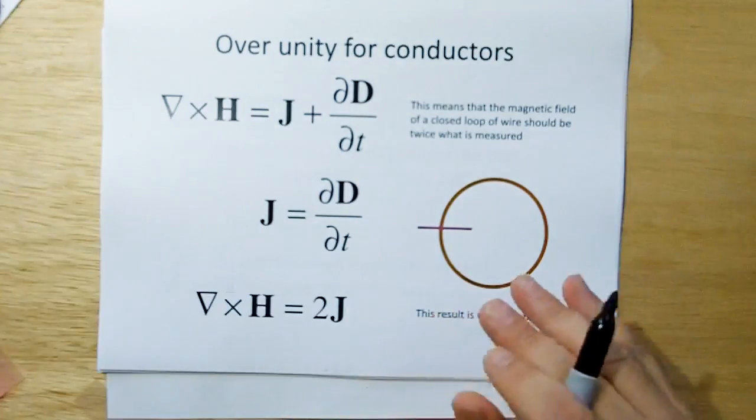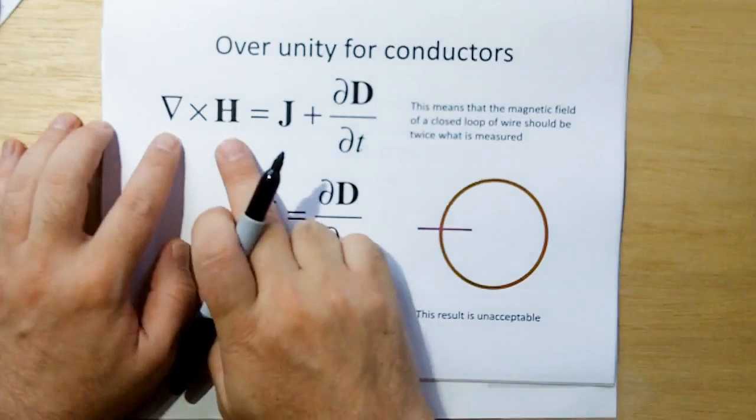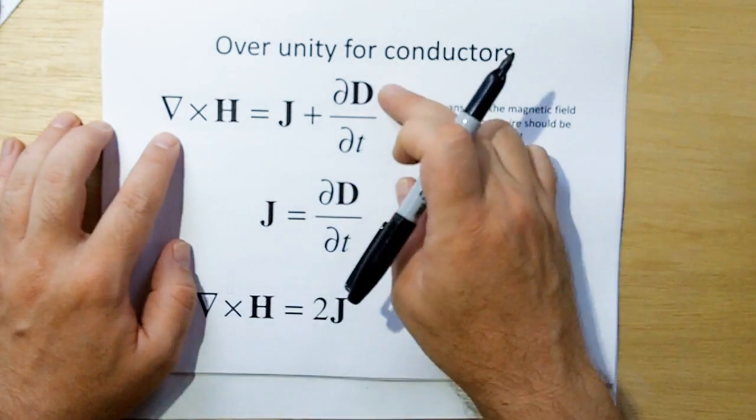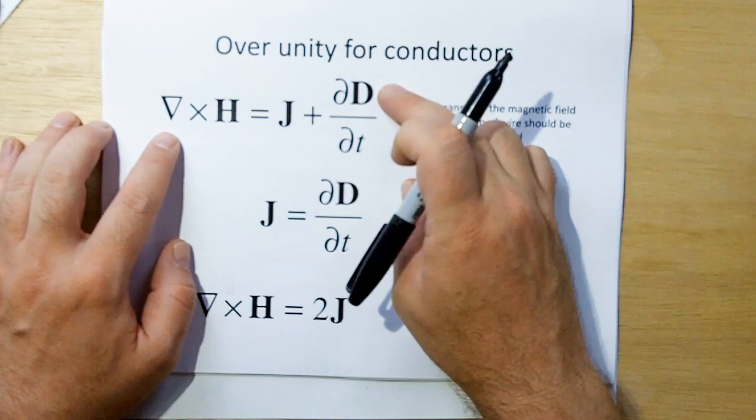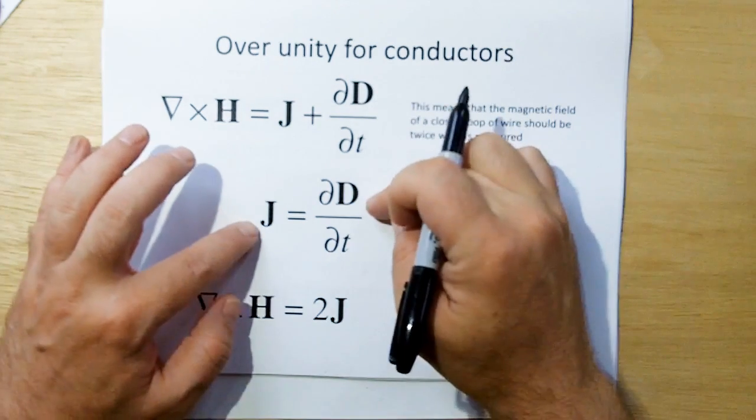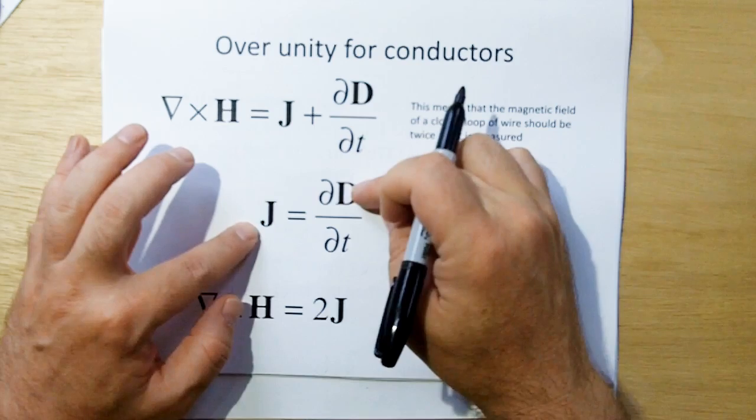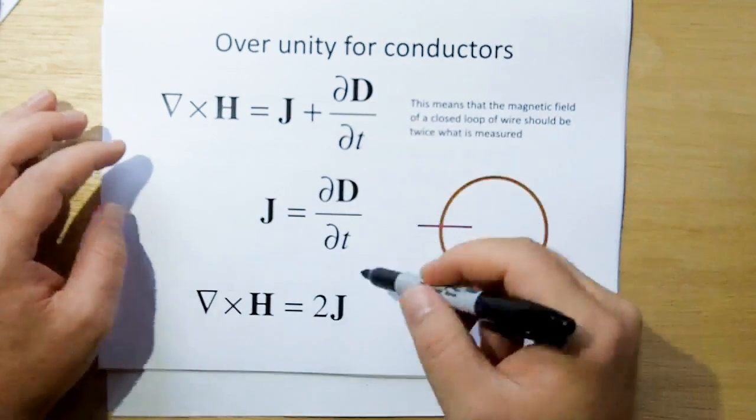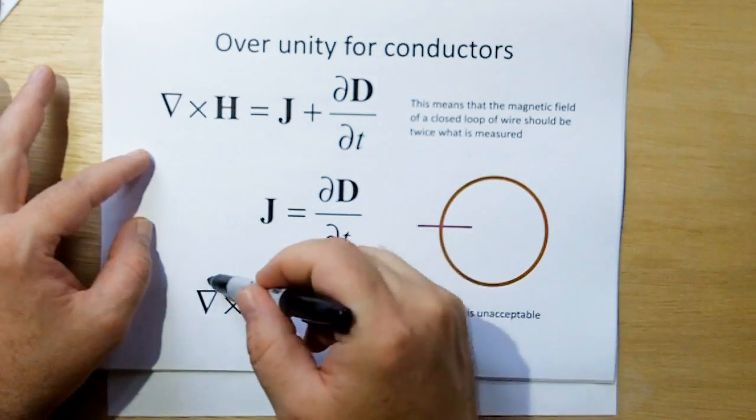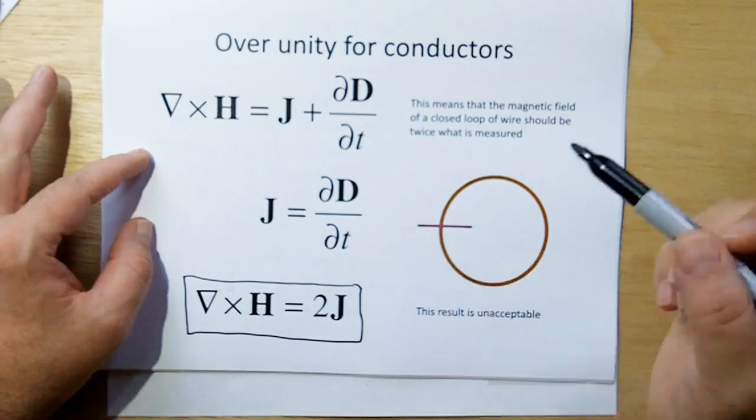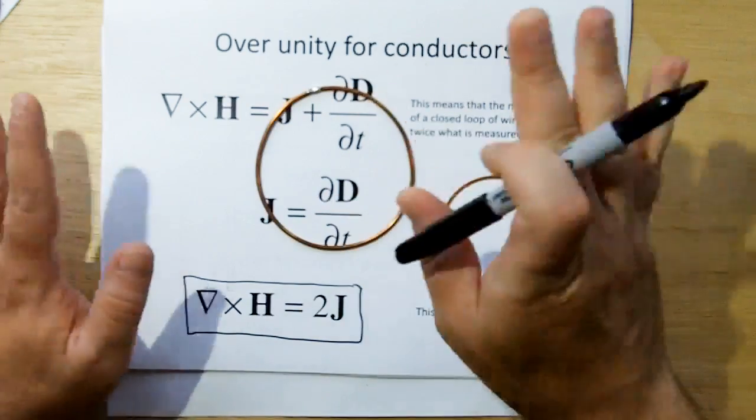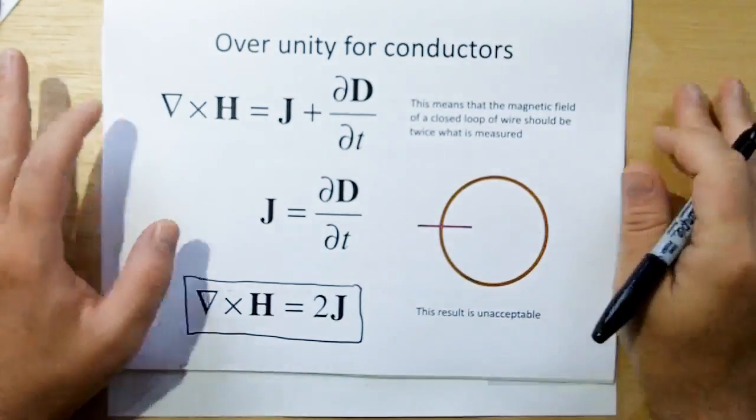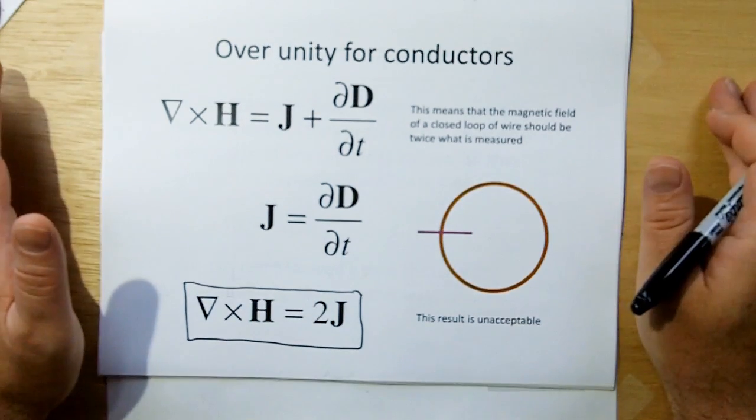So, if Maxwell said that a magnetic field is the contribution of both the current and the changing electric field in the area, and because we just showed that the changing electric field around a current is this, then we can substitute J in here, and then we come up with the final equation that the magnetic field contribution by a closed loop, we don't need to look at the capacitor, just the closed loop, is twice the current, which is over unity. This is unacceptable.